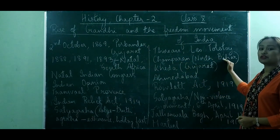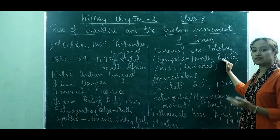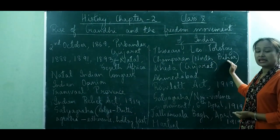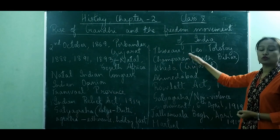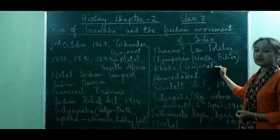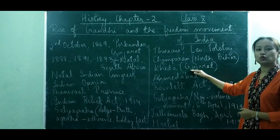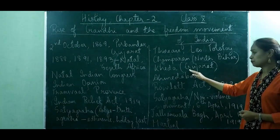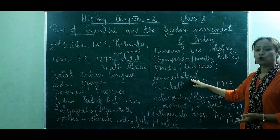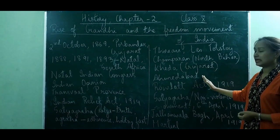In Champaran, North Bihar, he fought for the cause of the peasants who were forced by the British government to plant indigo in place of food crops. This injustice to the peasants made Gandhiji really angry, and he fought for their cause. In Khera, Gujarat, he fought for peasants who were made to pay taxes even when their crops failed, demanding that taxes should not be charged in years of crop failure. In Ahmedabad, he fought for mill workers against mill owners who were exploiting them and not paying them reasonable wages.